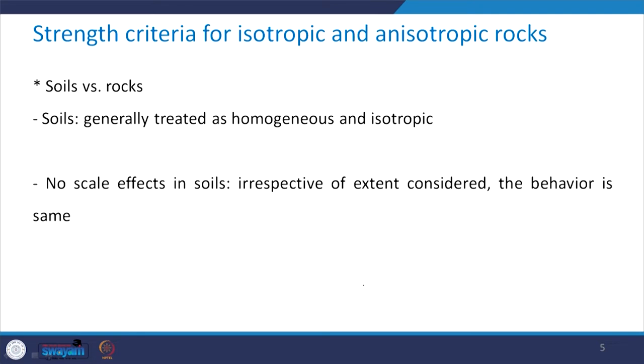Soils are generally treated as homogeneous and isotropic, although they are not. But most of the theories when they were developed in the beginning — that is the first assumption which is involved — homogeneous and isotropic, be it shear strength theories or consolidation, etc. There are no scale effects in case of soils; irrespective of the extent which is considered, the behavior of the soil specimen is going to be the same.